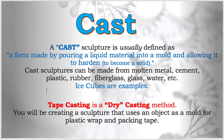For vocabulary: cast. A cast sculpture is usually defined as a form made by pouring liquid material into a mold and allowing it to harden or become solid. Cast sculptures can be made from molten metal, cement, plastic, rubber, fiberglass, glass, water, etc. Ice cubes are an example.